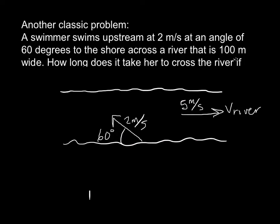So here's a classic problem. We have our swimmer swimming upstream at 2 meters per second at an angle of 60 degrees. She's going upstream, 2 meters per second. She's making an angle with the shore of 60 degrees. And the river itself is 100 meters across. So how long does it take her to cross the river if the river has a current of 5 meters per second?